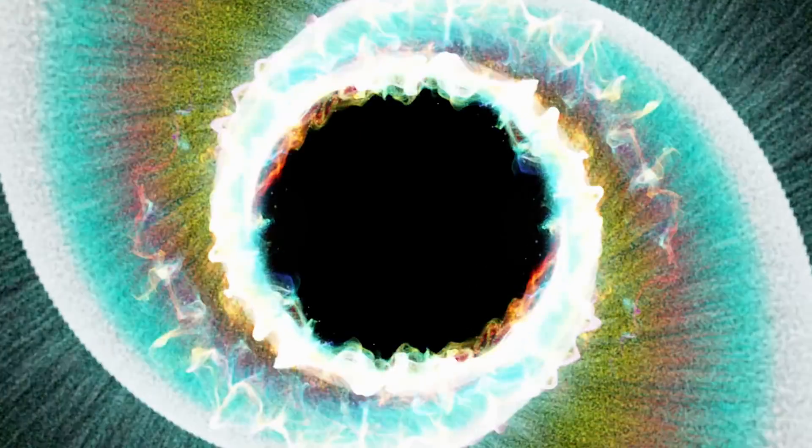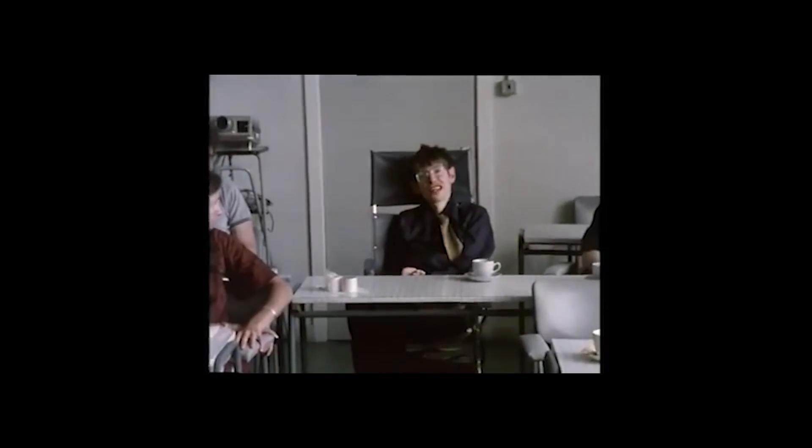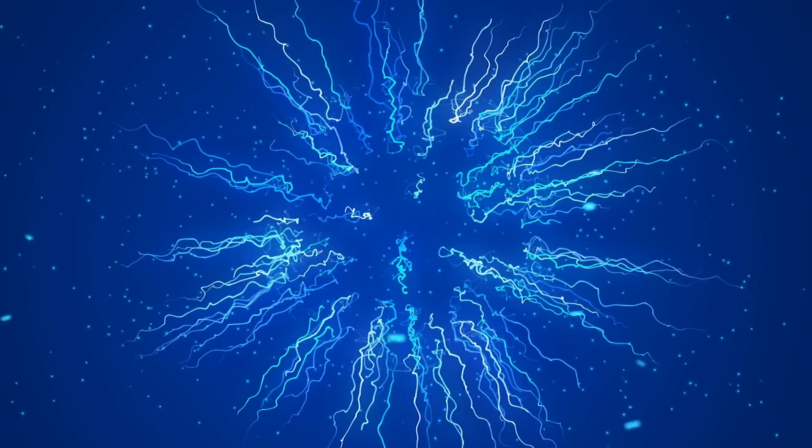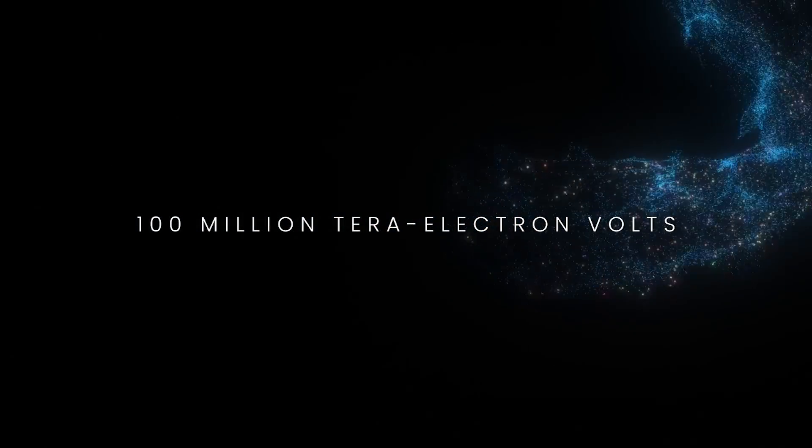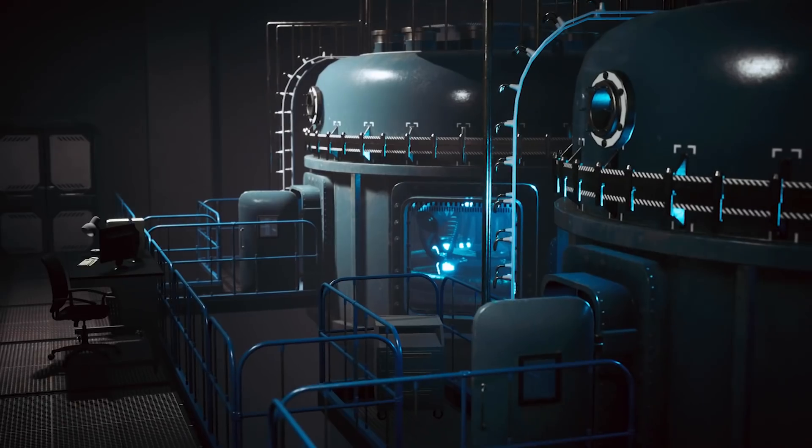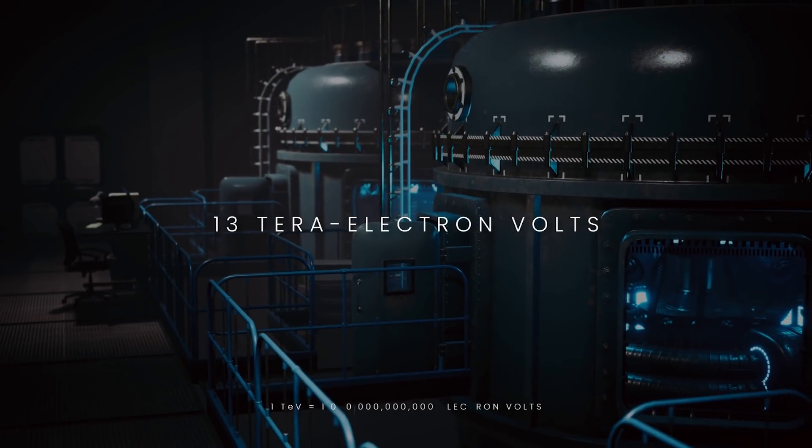We still don't know if we can make the Higgs boson descend to its true vacuum. Stephen Hawking thought that the energy levels of the God particle could be affected experimentally, but that would be very hard to do. It would take about 100 million tera electron volts. To compare, the Large Hadron Collider generates collisions at an energy of 13 tera electron volts.